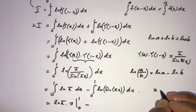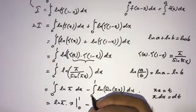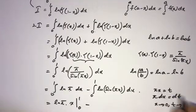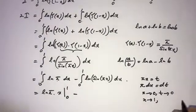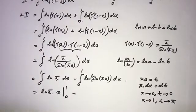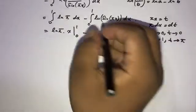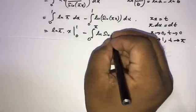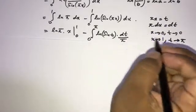For the remaining integral, we use the substitution pi x equals t, so pi dx equals dt. When x approaches 0, t approaches 0; when x approaches 1, t approaches pi. So the lower limit is 0 and the upper limit is pi. The integral becomes the integral from 0 to pi of ln(sin t) times dt over pi.